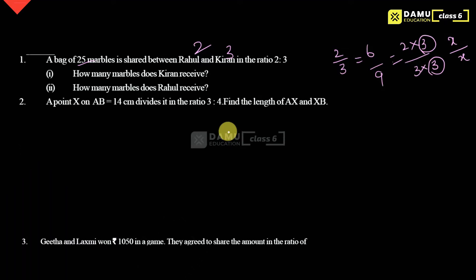This is the total number of parts and we don't know the exact value. So the exact values are multiplied by the same quantity. Kiran will get 3x marbles and Rahul will get 2x marbles. If we add both, 2x plus 3x will equal 25.